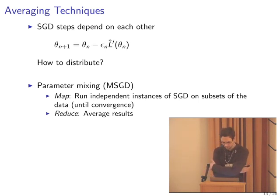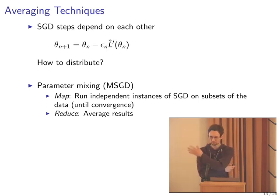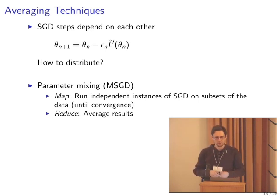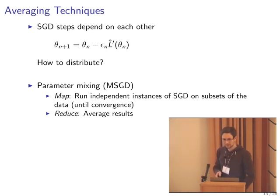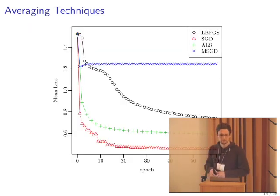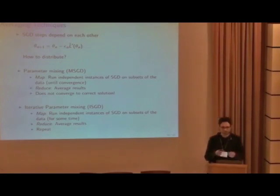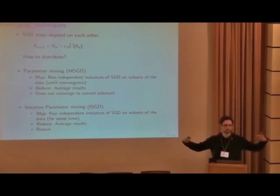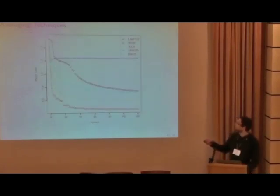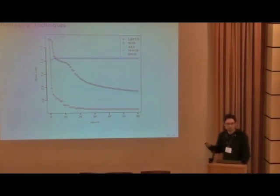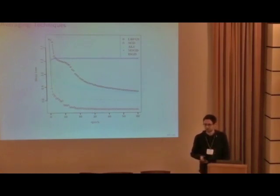Here are two approaches that have been proposed. One is parameter mixing: divide data into K subsets, spread to K nodes, each node runs SGD for a while, then average the result. This works for convex problems, but this problem is not convex. We tried it and it doesn't work — the averaging of local solutions does not give a good global solution. The next approach is iterative parameter mixing: split data on K nodes, run for a while without convergence, average the parameters, broadcast back to nodes, continue, and repeat. This does get convergence, but it's slow. By doing these averaging steps, you're losing a lot of the performance that SGD has.